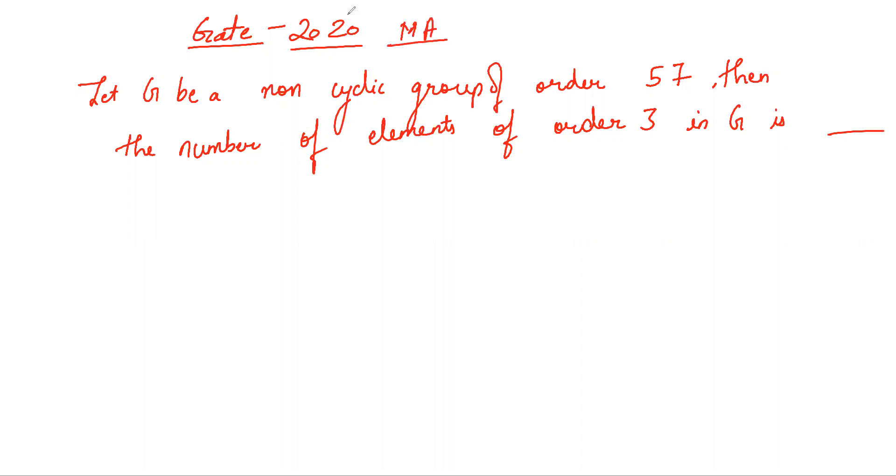The problem says: Let G be a non-cyclic group of order 57, then the number of elements of order 3 is...